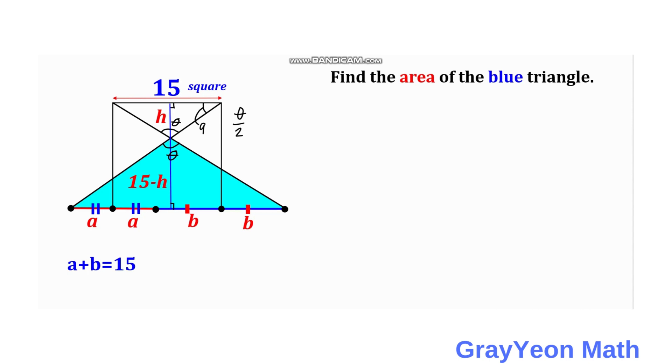So this becomes 90 minus theta over 2. And therefore, we can say that the two triangles are actually similar.